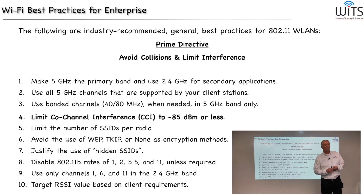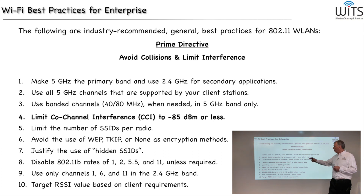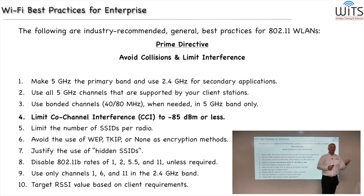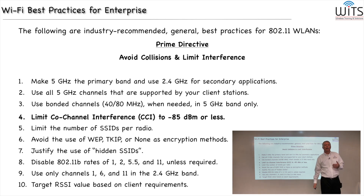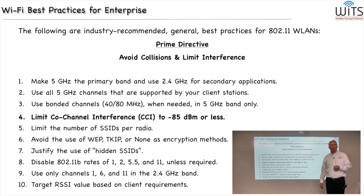Adjacent channel interference has happened almost exclusively in 2.4 gigahertz, and it comes because of those channel numbers. The channels are numbered 1 through 11, but they are only separated by 5 megahertz — a mistake that the early Wi-Fi task groups created. There are really only three non-overlapping channels in 2.4 gigahertz, and they are 1, 6, and 11.